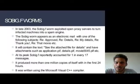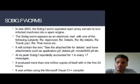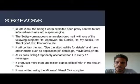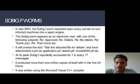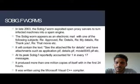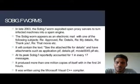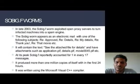Sobig.F worms, in late 2003, exploited open proxy servers to turn infected machines into a spam engine. The worm appeared as an email with subjects such as 're: approved,' 're: details,' 're: my details,' 're: thank you,' or 're: that movie,' containing text like 'see the attached file for details' with attachments such as application.pif or movie0045.pif. At its peak, Sobig.F reportedly accounted for 1 in every 17 email messages, producing more than 1 million copies of itself within the first 24 hours. It was written using the Microsoft Visual C++ compiler.